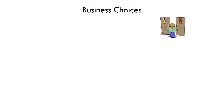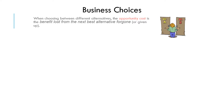Let's start with opportunity cost. Often businesses have to choose between two different alternatives — should I invest in my marketing or should I invest in building a new factory, for example? A way in which a business can assess that decision — what is the best decision — is to think about the opportunity cost. The opportunity cost is the benefit lost from the next best alternative foregone.